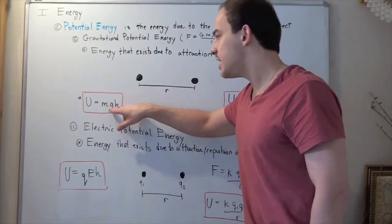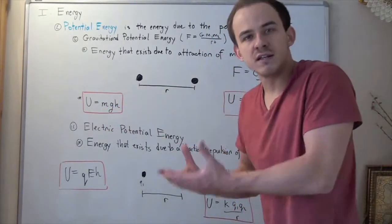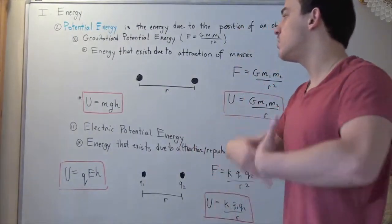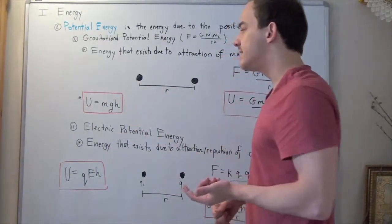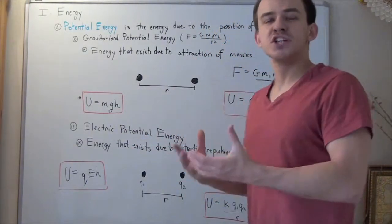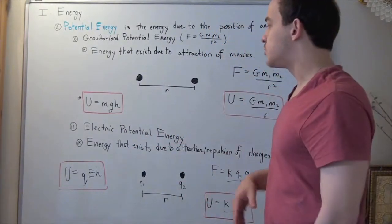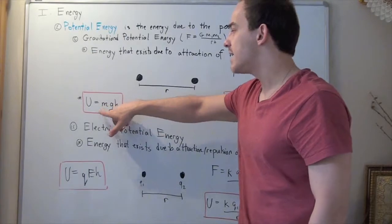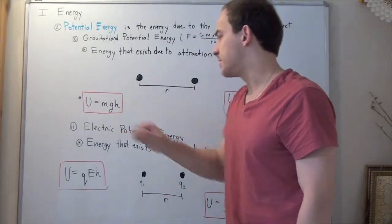Note that G times H gives us the gravitational potential of the object. So, I multiply it by the mass and I get my energy. So, now let's look at electric potential energy.